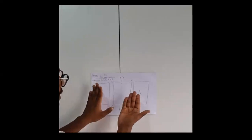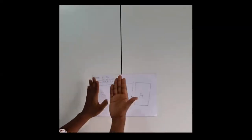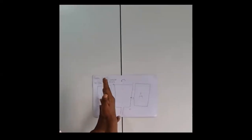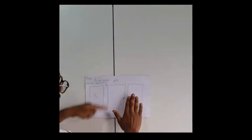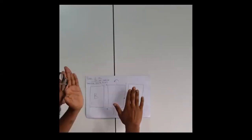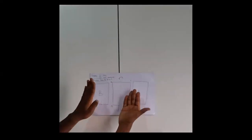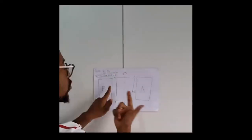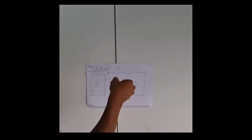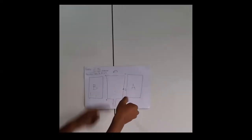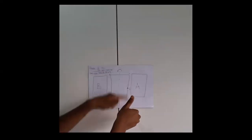Since the current on side DC is into the page and the coil on that side moves upwards, the thumb points upwards. We now have the middle finger pointing into the page and the thumb pointing upwards. We need to unfold the index finger while keeping all fingers perpendicular to one another to find the direction of the magnetic field.